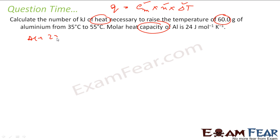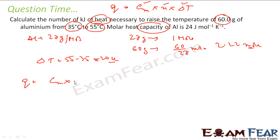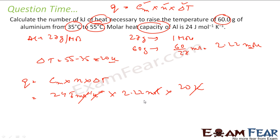Delta T = 55 − 35 = 20°C, which equals 20 K. Using Q = n × Cp × delta T: Q = 2.22 mol × 24 J/mol·K × 20 K = 1065.6 J. Converting to kilojoules gives approximately 1.067 kJ.